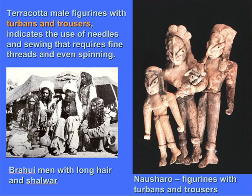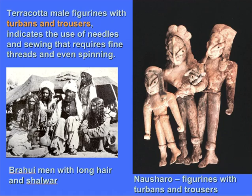We also have figurines from the site of Nausharo, slightly later at about 2800 to 2200 BC, where we have people wearing pantaloons which would have been sewn using needles and thread, as well as elaborate headdresses. Similar types of pants or pantaloons are worn today among communities living in the same region, and we can see a very long continuity in some textile traditions of this part of Pakistan.